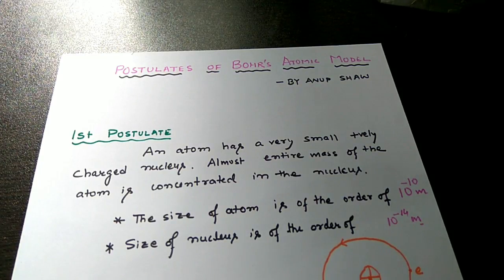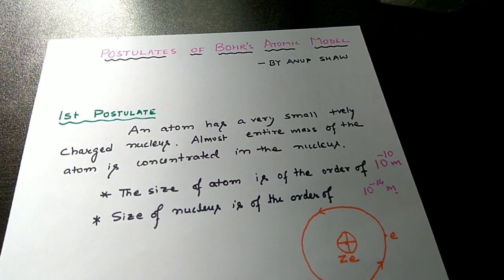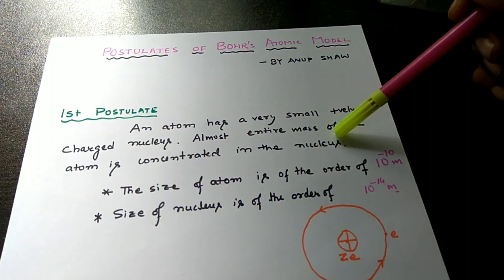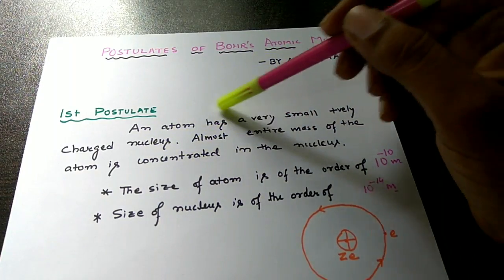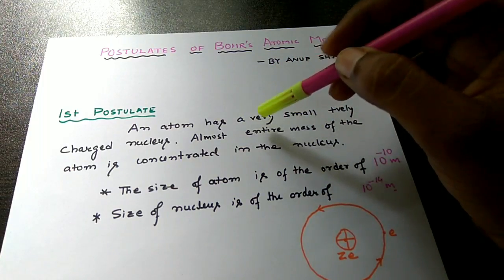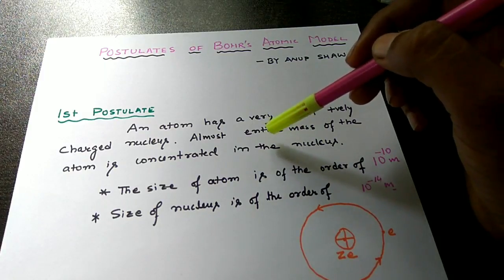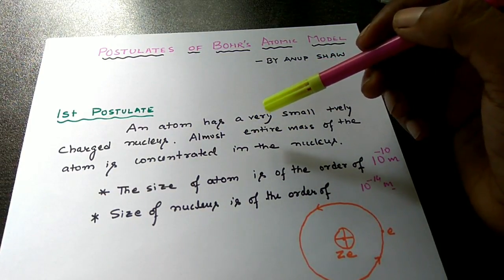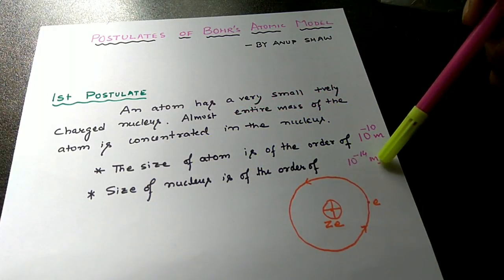There are some postulates of Bohr's model. The first postulate says an atom has a very small positively charged nucleus, and almost the entire mass of the atom is concentrated in the nucleus. This means a large portion of the atom is empty. There are three fundamental particles: electron, proton, and neutron. Protons and neutrons are heavier and remain at the center in the nucleus, while electrons are very light and revolve around the nucleus in orbits called stationary orbits. The size of the atom is of the order of 10 to the power minus 10 meters, and the size of the nucleus is of the order of 10 to the power minus 14 meters.